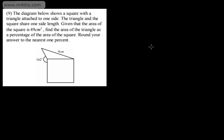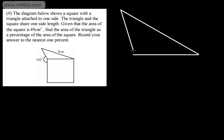I'm just going to draw a sketch to the side. What we've got here is the triangle. We've got a side length of 9, and we've got this angle on the outside of 162 degrees, so this side is going to be 9cm. If the area of the square is 49, the square root of 49 is 7, so each side length will be 7cm.